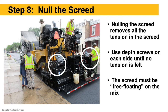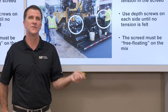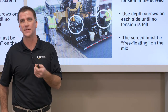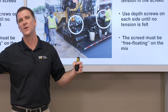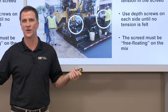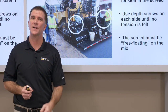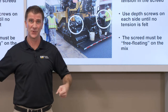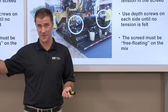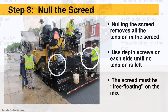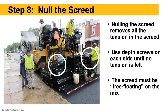Now we null the screed out. Once we set it down and take out the slack, there's a bit of tension on it. To null it out, turn the depth screws one side at a time — pick a side, turn that depth crank until it's loose with no tension felt, then go to the other side and do the same. One mistake I see crews make is having someone on the left side and someone on the right side both turning those depth cranks at the same time — you might get what we call a false null where it feels loose to both but there's still tension on the screed. Do one side, get it loose, then do the other side.